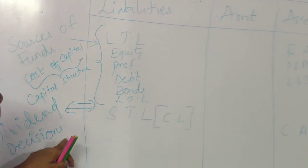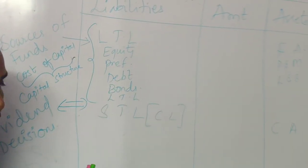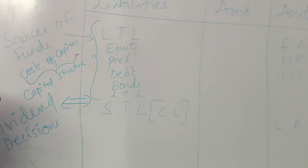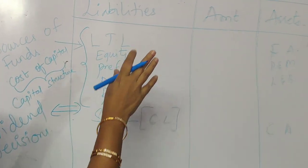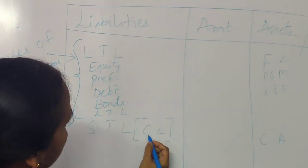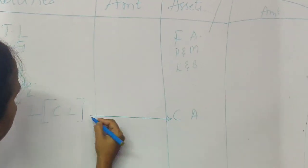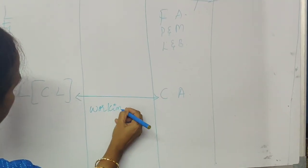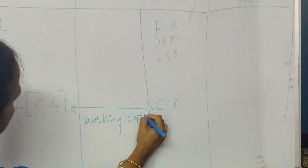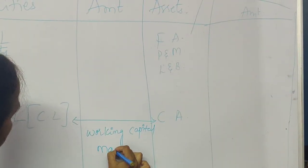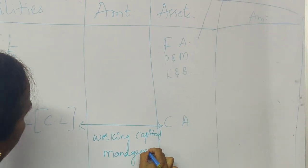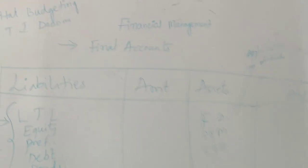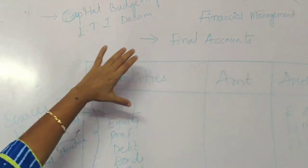Dividend decisions address how to keep our equity shareholders engaged and how they are going to impact our company or organization. When it comes to current assets and current liabilities, we are going to learn working capital management.